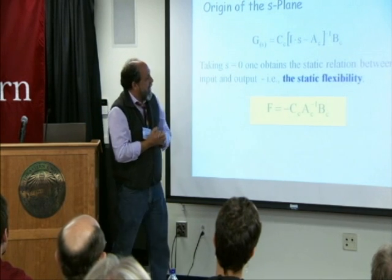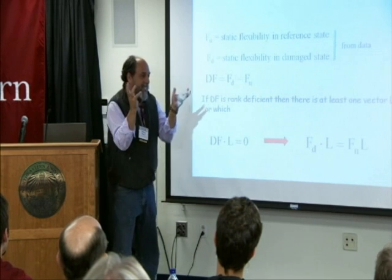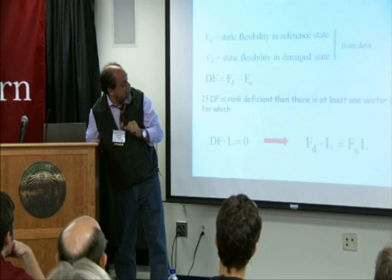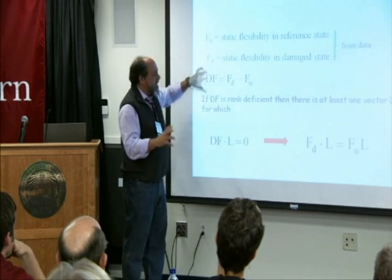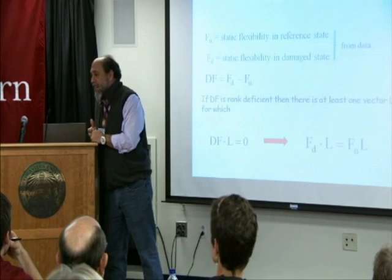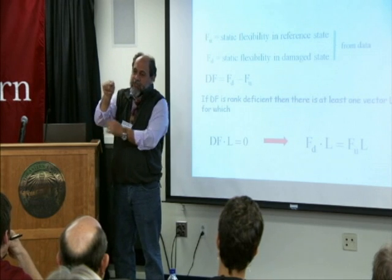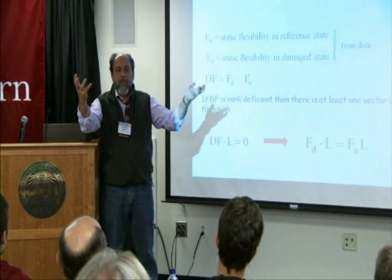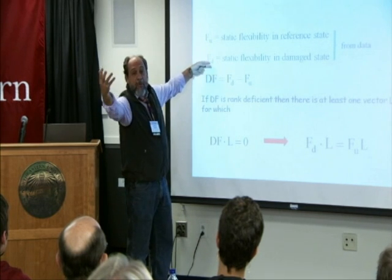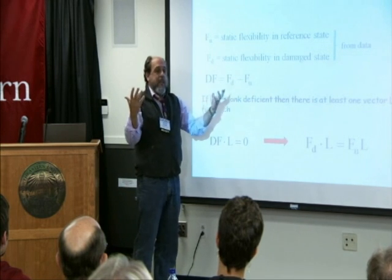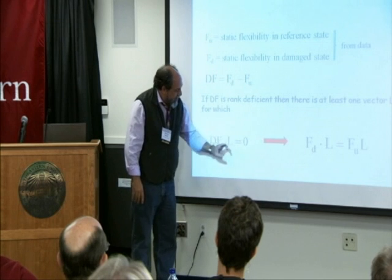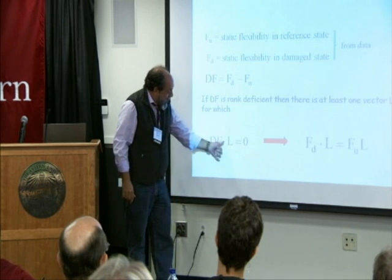In this particular application, let's say that this matrix is actually the flexibility matrix — structural analysis 101: the relationship between loads at a sensor position and the movement at that position. So we have two flexibility matrices: FU, the static flexibility in the reference state (Monday), and FD, the static flexibility in the damage state. There is a difference between the two, and we can see they are different. Where is the information about where the damage is? Here is the key: if there is a vector that...